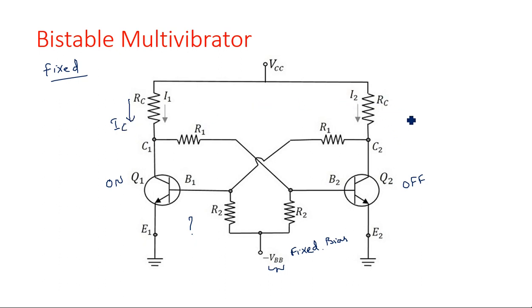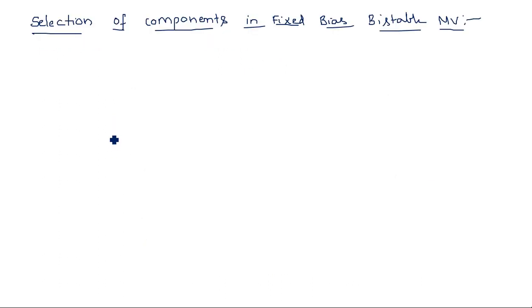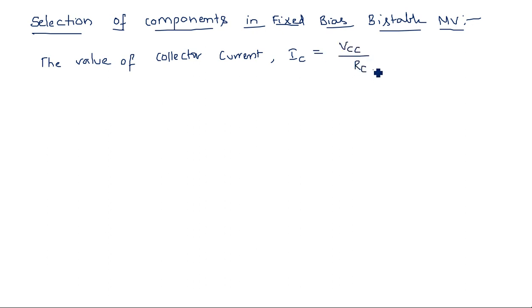For transistor Q2 in the OFF state, there is very little current flowing — IC2 is equal to zero. For the ON transistor, IC1 equals VCC divided by RC, since voltage divided by resistance gives current. So for an ON transistor, the collector current IC must equal VCC/RC. If it is the first transistor, IC = VCC/RC1; if it is the second transistor, IC = VCC/RC2.